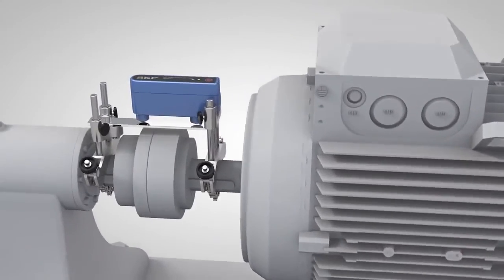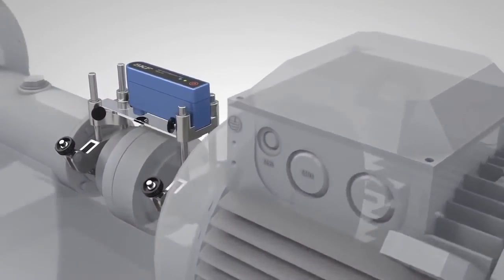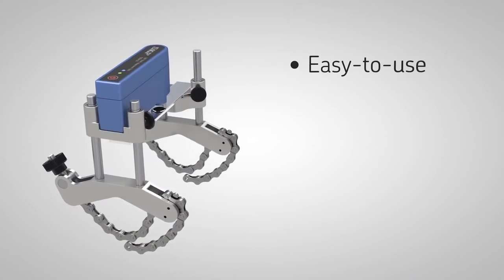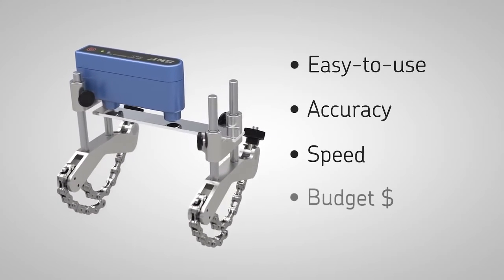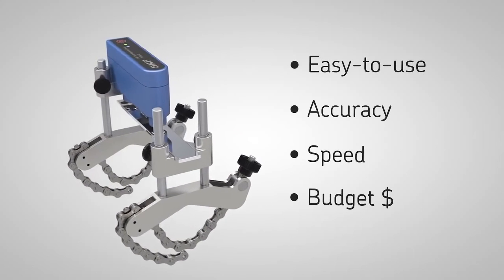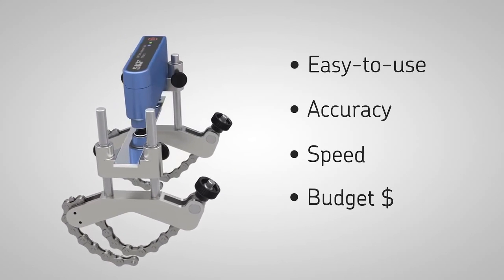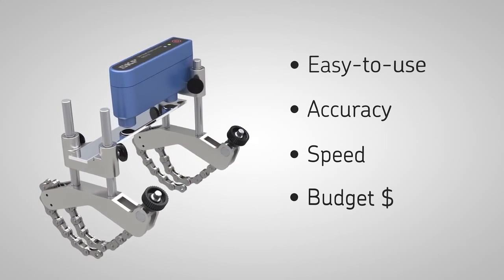the SKF shaft alignment tool TKSA 11 is an excellent choice for basic and advanced shaft alignment. It is easy to use, allows accurate and fast machine alignment, and is affordable for almost every budget.